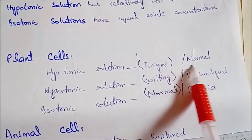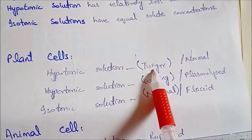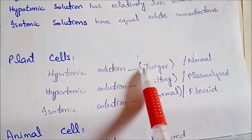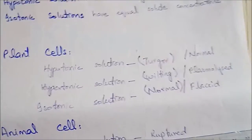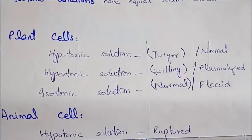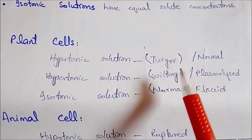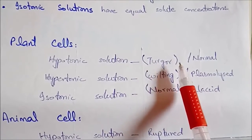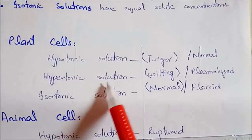Cell fool jayega, cell ka volume bada ho jayega. Yahi plant cell ki normal condition hai jise hum turgid kehte hain — jiski wajah se plant seedha khada hota hai aur mujhata nahi. Zyada pressure ki wajah se cell membrane — jo ke lipid bilayer hai, ek flexible layer — fad jani chahiye, lekin plant cells mein wo rupture nahi hoti kyunki plant cells mein cell membrane ke bahar ek hard cell wall maujud hai.